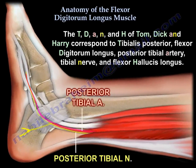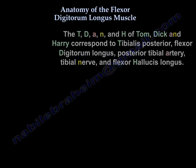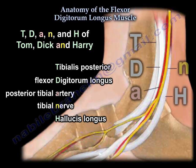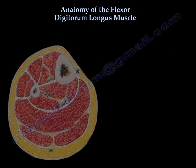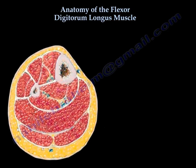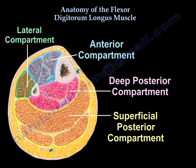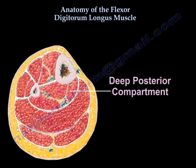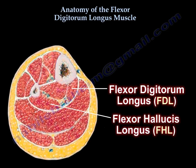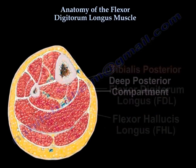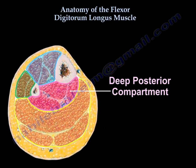Tom, Dick, and Harry show the arrangement of the structures in this area — you probably need to memorize that. This is a cross section of the leg showing the muscle arrangement and the position of the flexor digitorum longus muscle. Just remember it is in the deep posterior compartment of the leg.